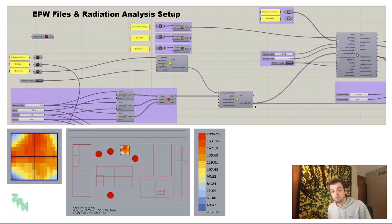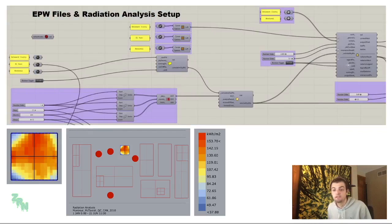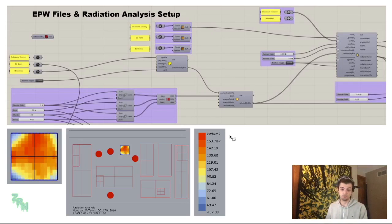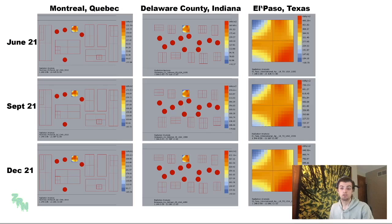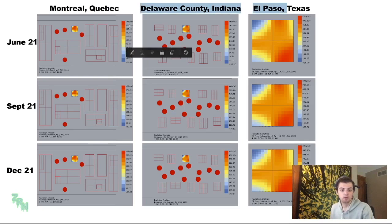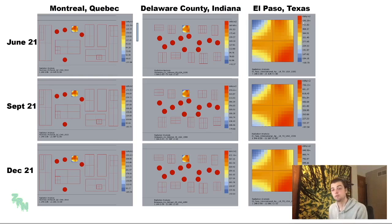You then set up your sky matrix by connecting its output into the radiation analysis input. Finally, you want the parallel run boolean toggled to true. As you can see, this radiation analysis presents us with a colorful grid representing the amount of kilowatt hours each grid surface is receiving. After testing different environments and days, we can compare outputs — in Montreal the kilowatt hours are less than in El Paso, Texas, and through basic geography we know the sun hits more directly further south.